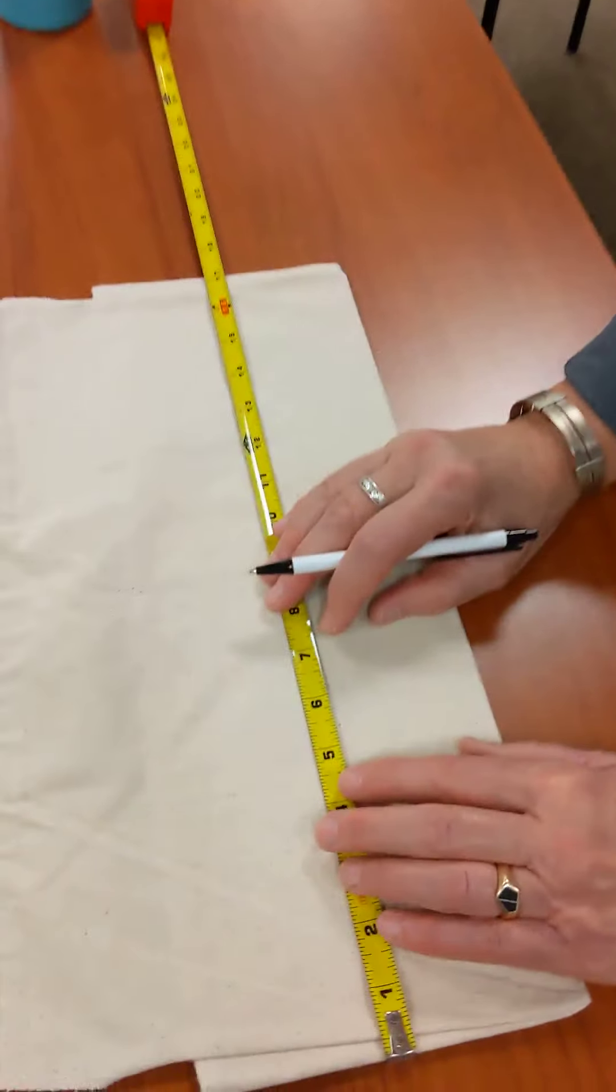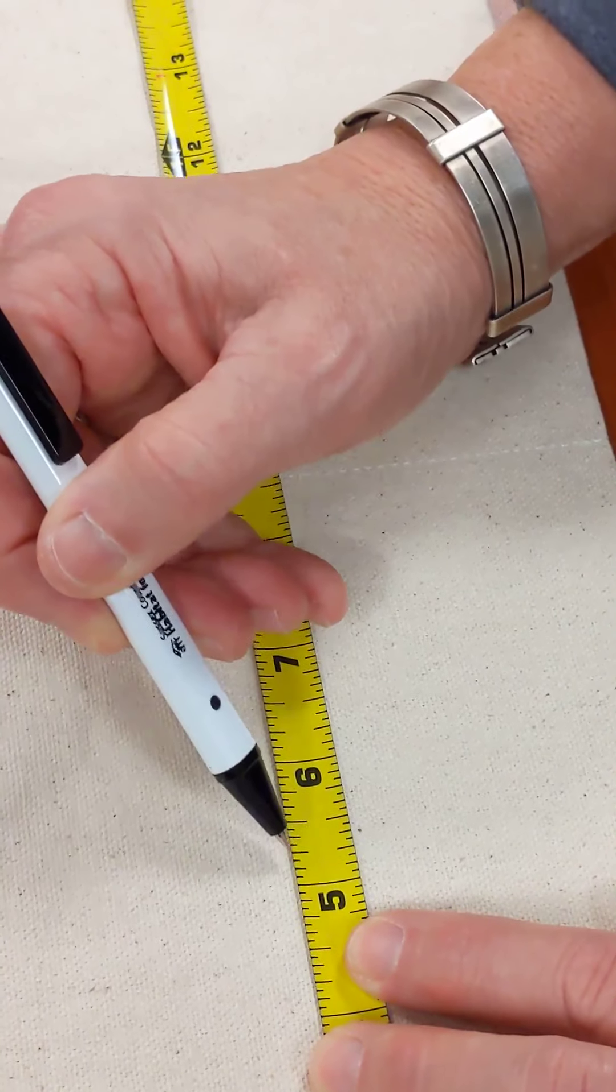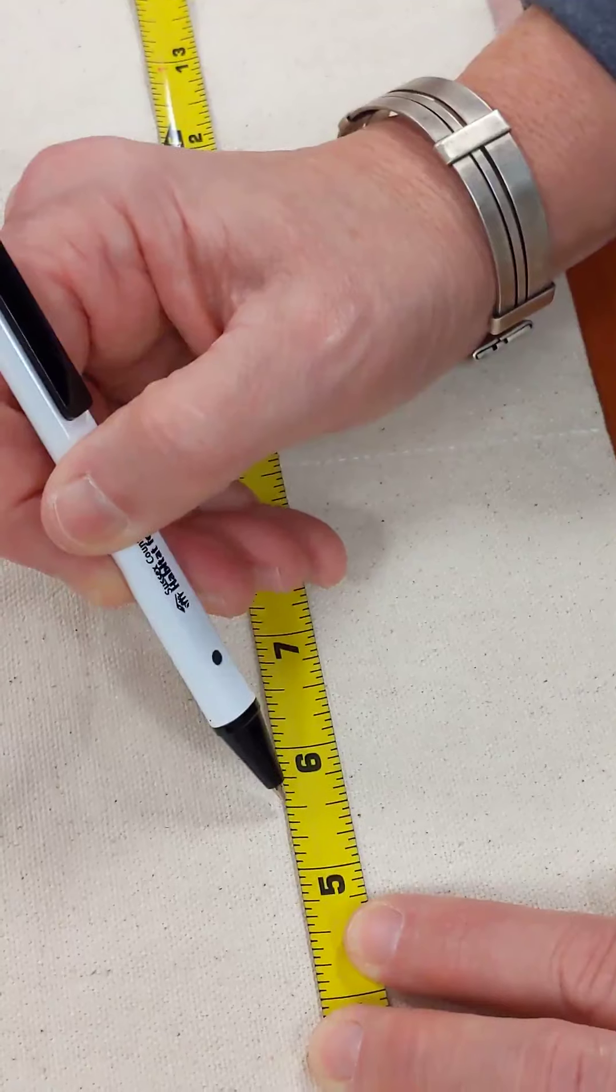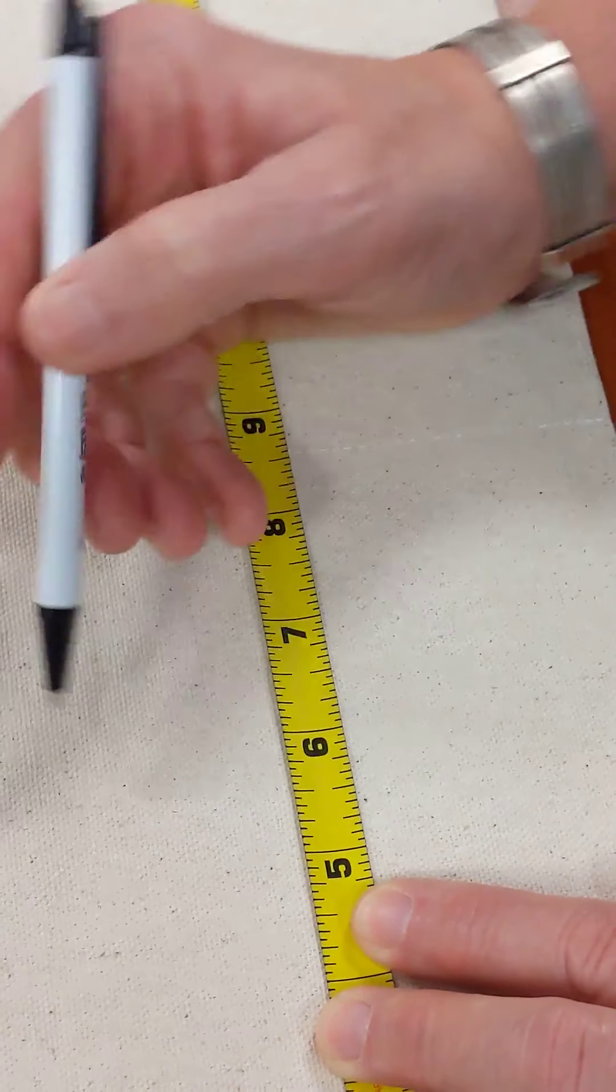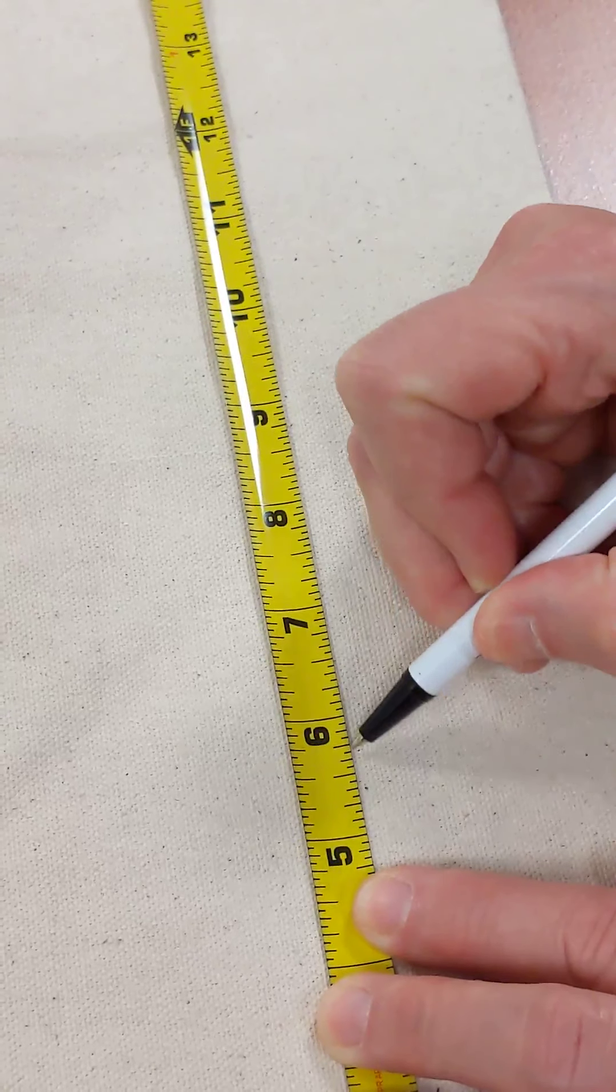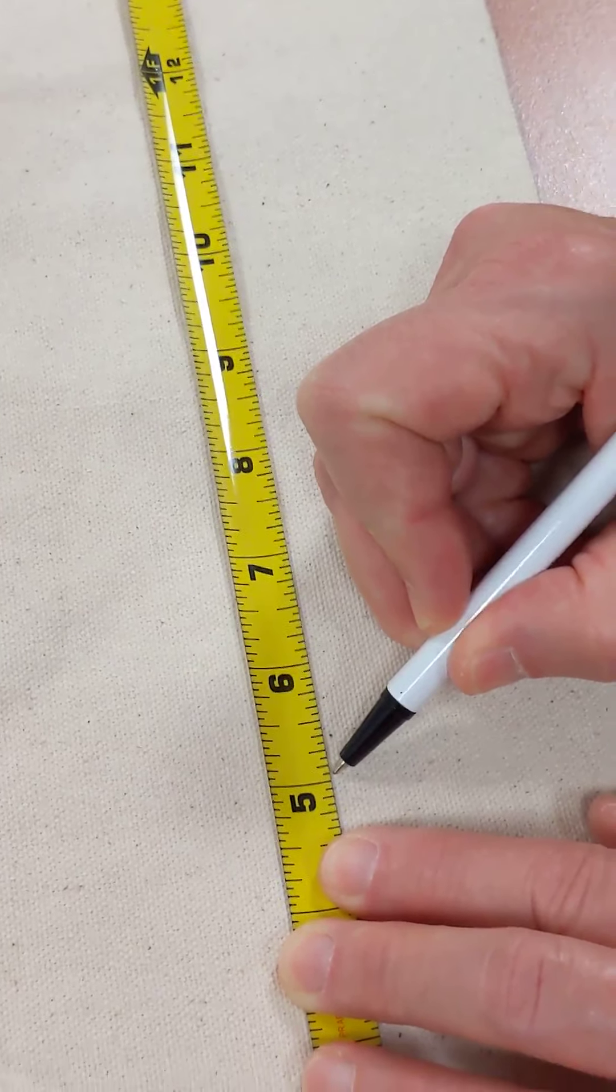I knew what the measurement was. So the first thing you need to do with your tape measure is how many little lines do you have between the inch marks? And in most cases, you're going to see 16. So each mark is a sixteenth of an inch.